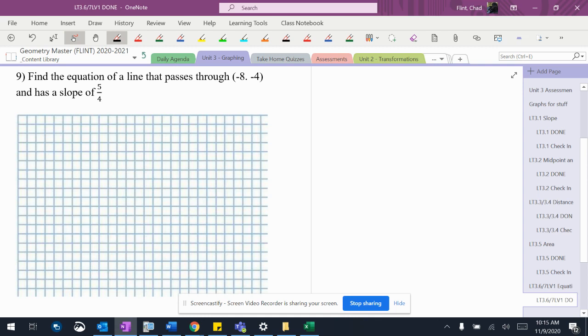Find the equation of a line that passes through negative 8 - that should be a comma, not a period. Alright, negative 8, negative 4, it has a slope of that.